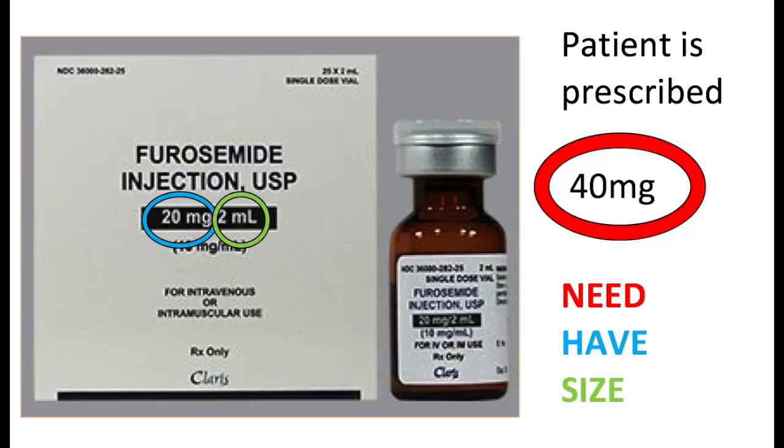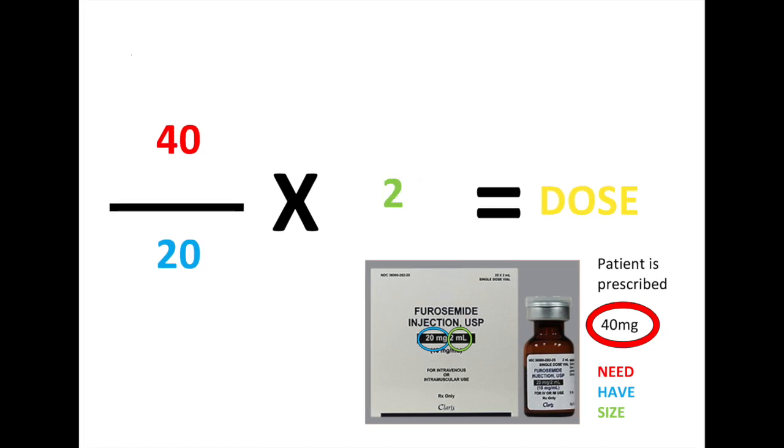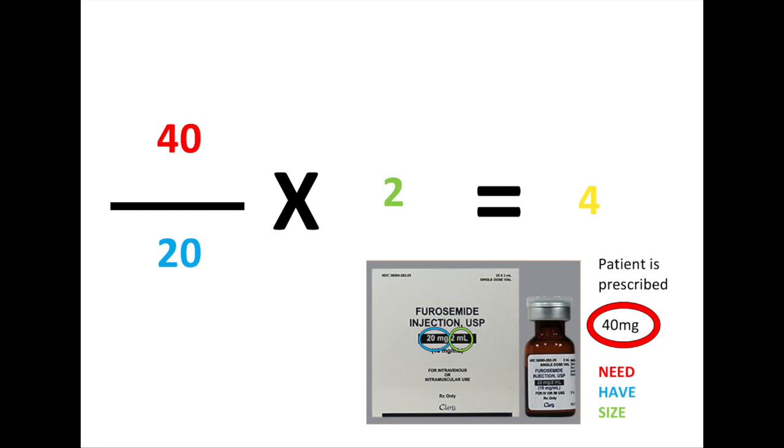Now we'll move on to IVs. You won't do much with IVs as a student, but they're changing it so that you actually give them when you're a student. Even though I didn't do that, I still had to learn how to set up an IV and work out IV medication. Take IV furosemide — that's 20 milligrams per 2 mils. If we want to give 40 milligrams: 40 divided by 20 is 2, then multiply by 2 because it comes in 2 mils. 2 times 2 is 4, so we give 4 millilitres to deliver 40 milligrams.